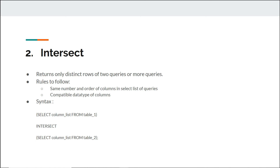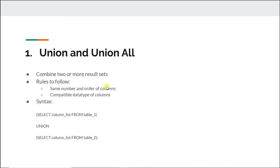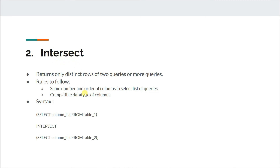In our union we got all names from the customers and employees tables. When we did UNION ALL there was one extra row, meaning one row is common — one employee and one customer share the same name. Using intersect (or its emulation), you can find that name. Your assignment is to find out the name of that customer or employee that is the same.